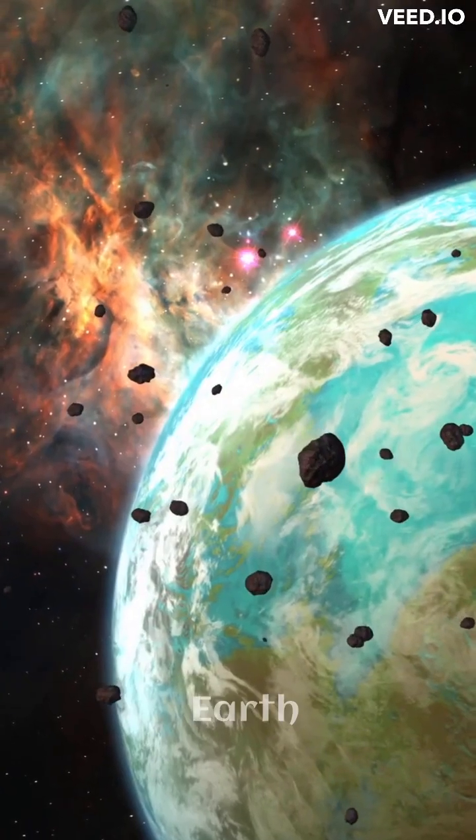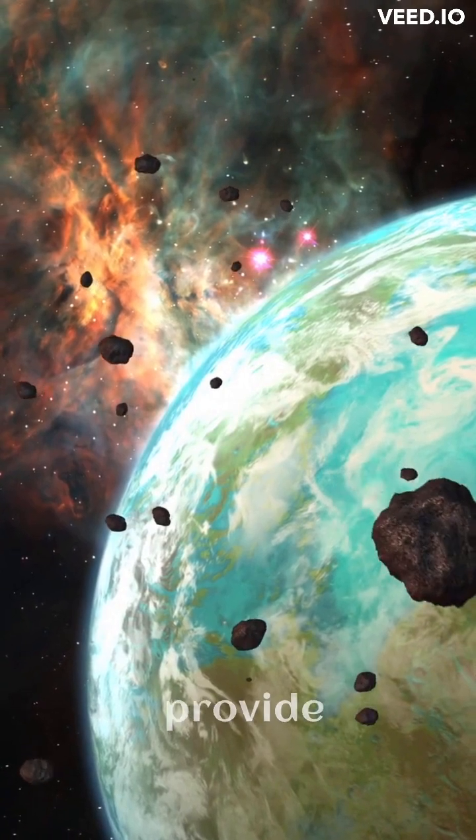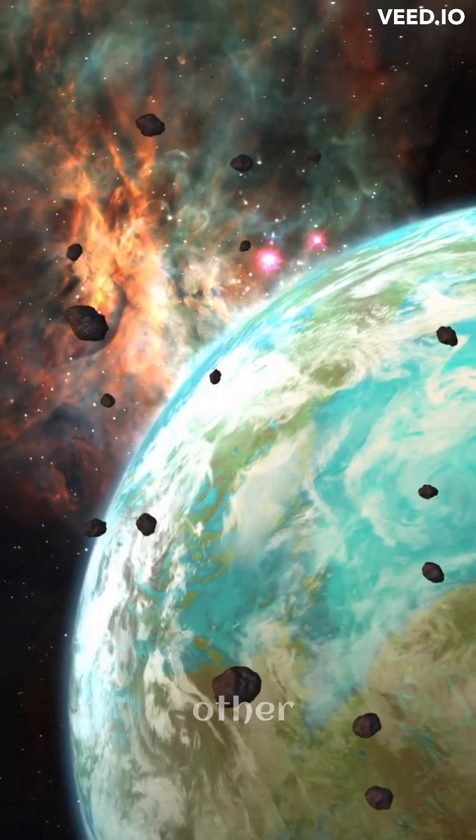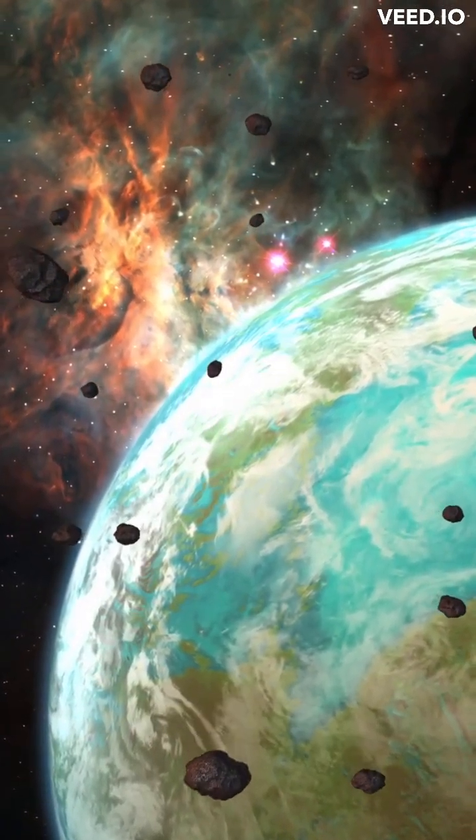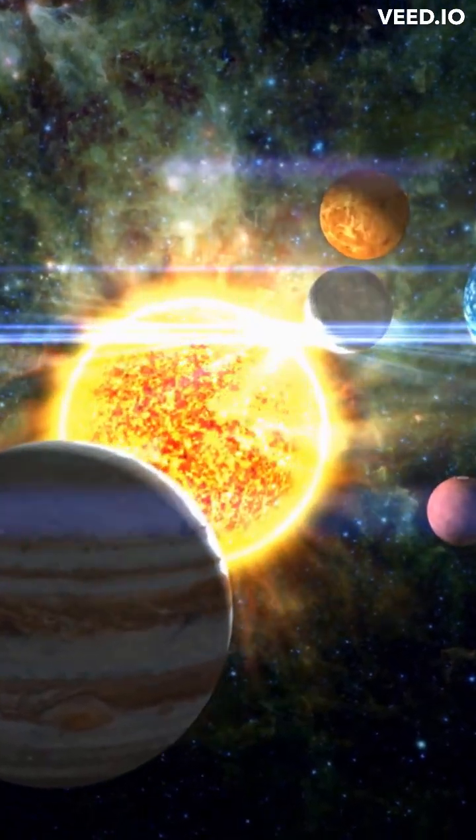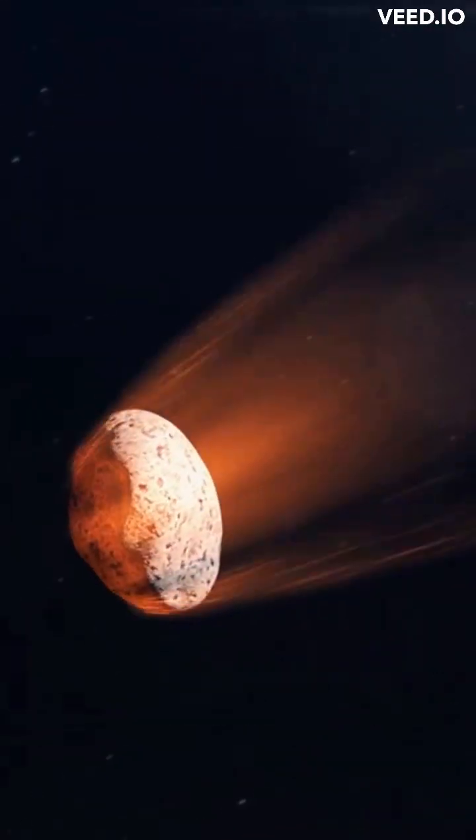Meteorites are not like Earth rocks—most are far older and provide some of the only samples we have of other worlds: other planets, asteroids, and possibly comets in our solar system.